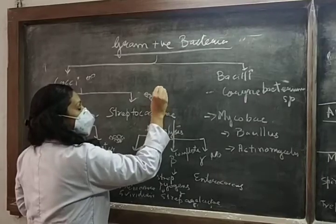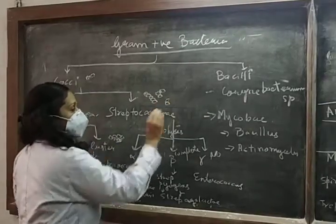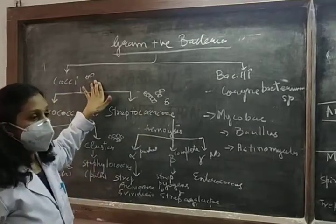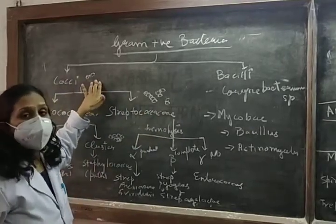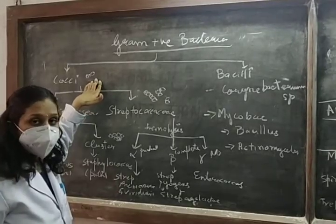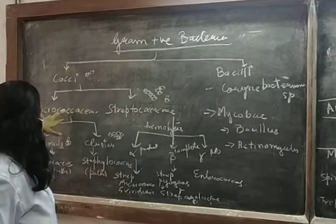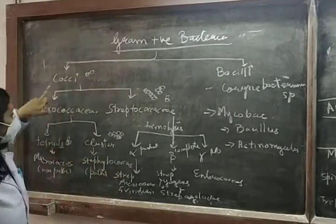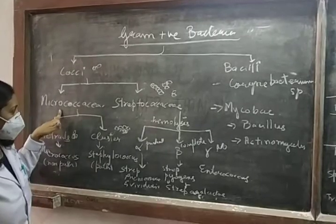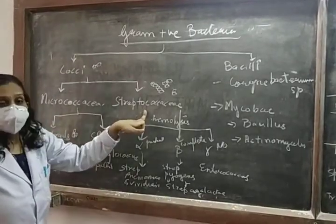Chains can be short or long, or just pairs of two. Cocci are round shaped and, as they are gram-positive, they will look purple under microscopy after gram staining. Cocci are divided into two classes: one is Micrococcaceae and the other is Streptococcaceae.